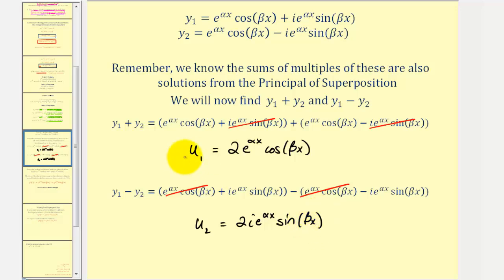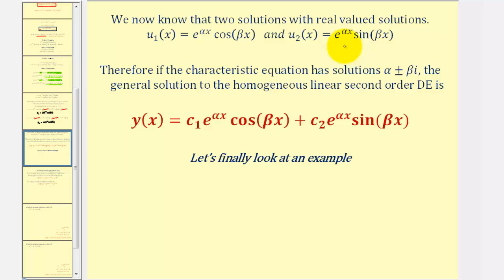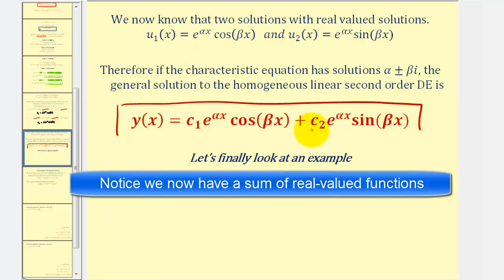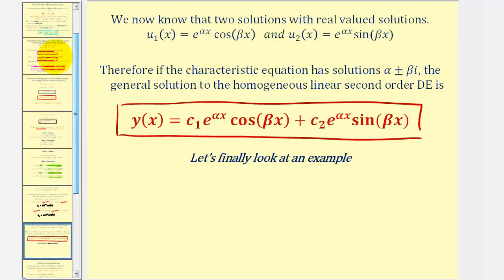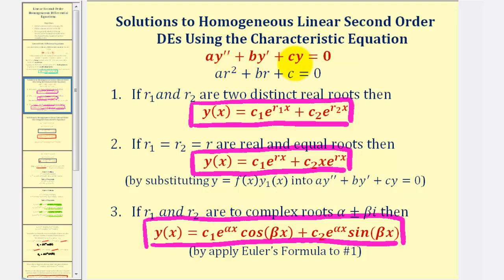Notice how the sum gave us one solution and the difference gave us another. Due to the principle of superposition, if we have two solutions, then the sum of multiples of these would also be solutions. Therefore, if the characteristic equation has solutions alpha plus or minus beta i, the general solution to the homogeneous linear second-order differential equation with constant coefficients would be in this form here — a constant times u sub one plus a constant times u sub two. This takes care of the third case: when the characteristic equation has two complex roots, our general solution will be in this form, with substitution for alpha and beta.